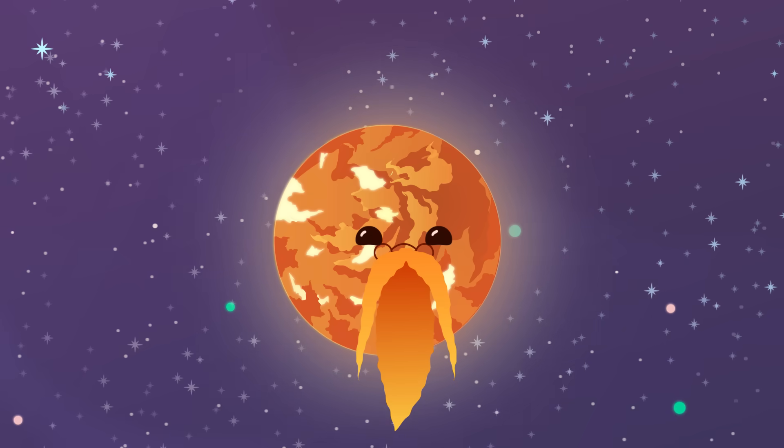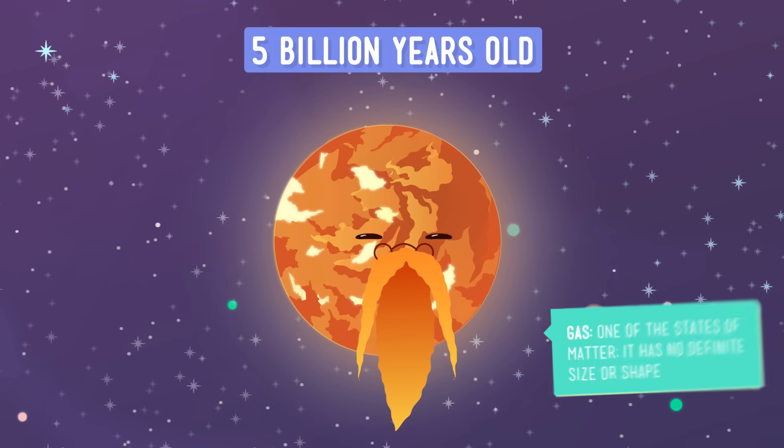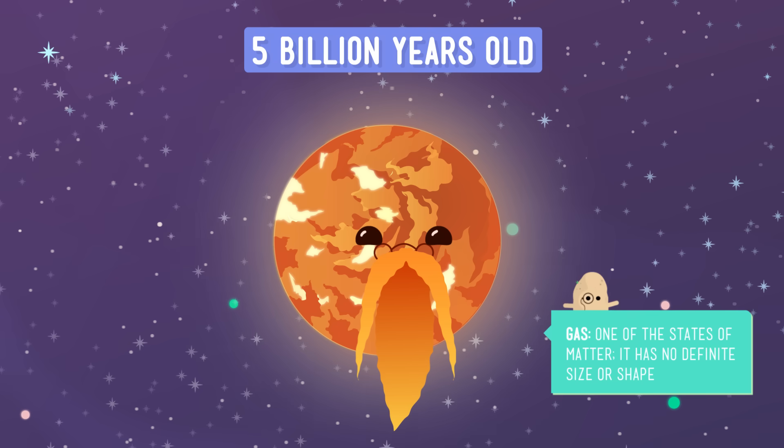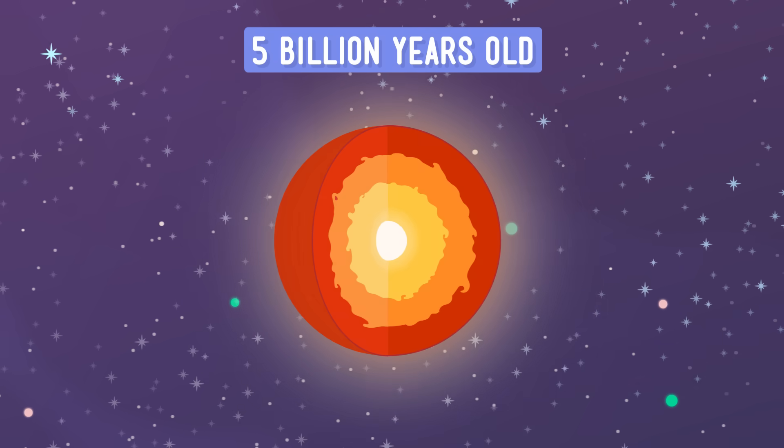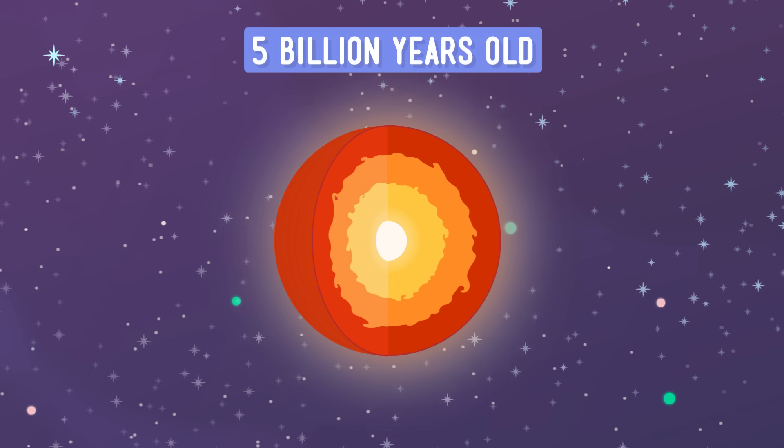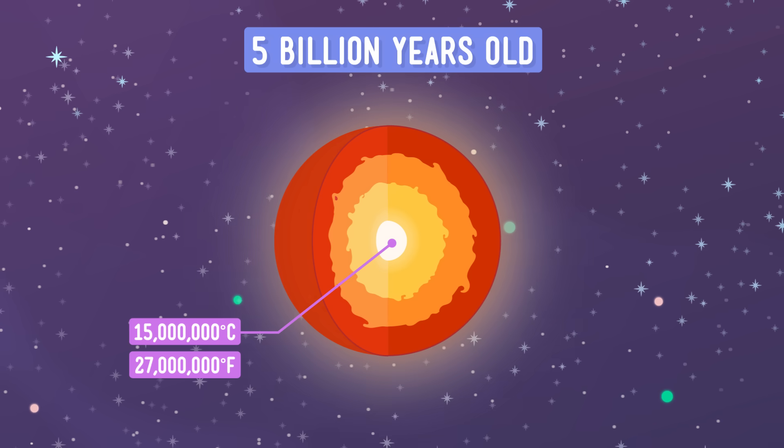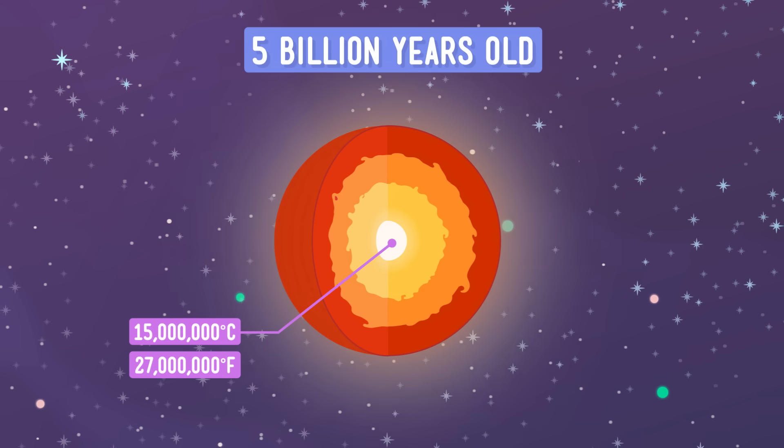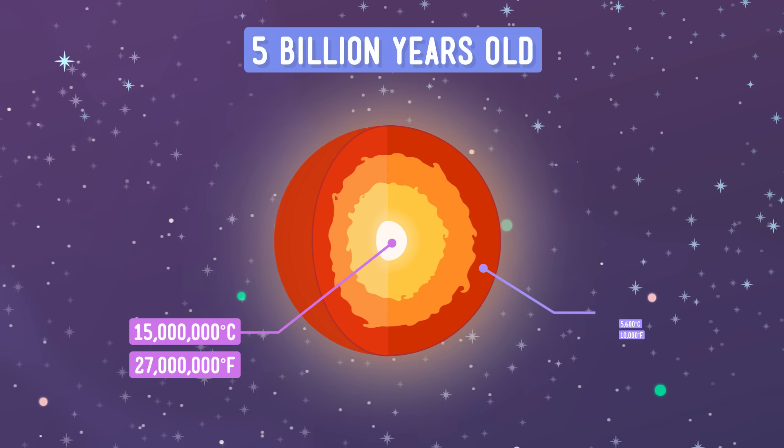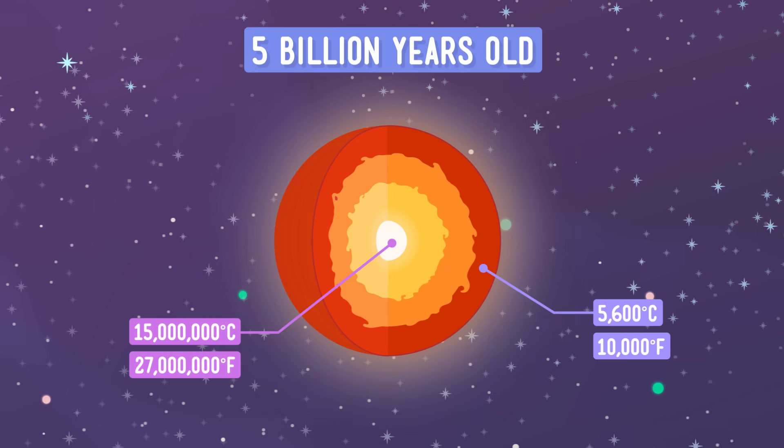First, let's talk about what the Sun is. It's a 5 billion year old big ball of super hot gas. The hottest part of the Sun is its core, or center, which is about 15 million degrees Celsius. Its surface is not quite as hot, but it's still almost 5,600 degrees Celsius, which is pretty toasty.